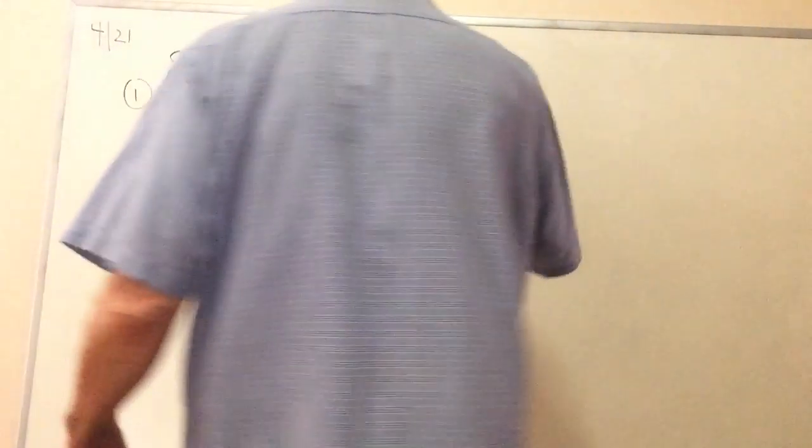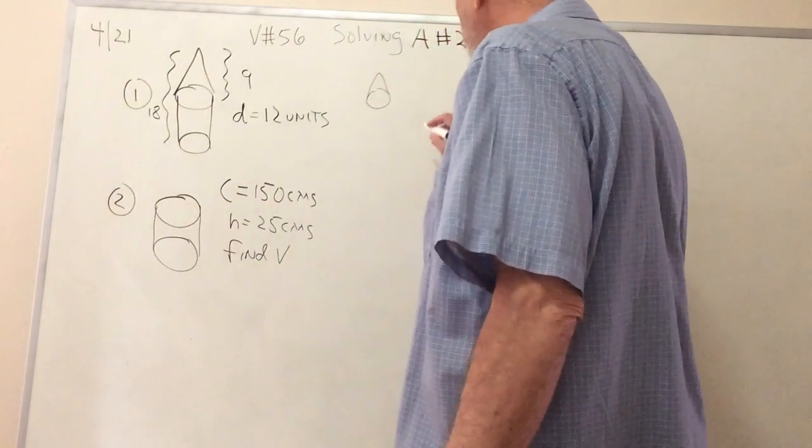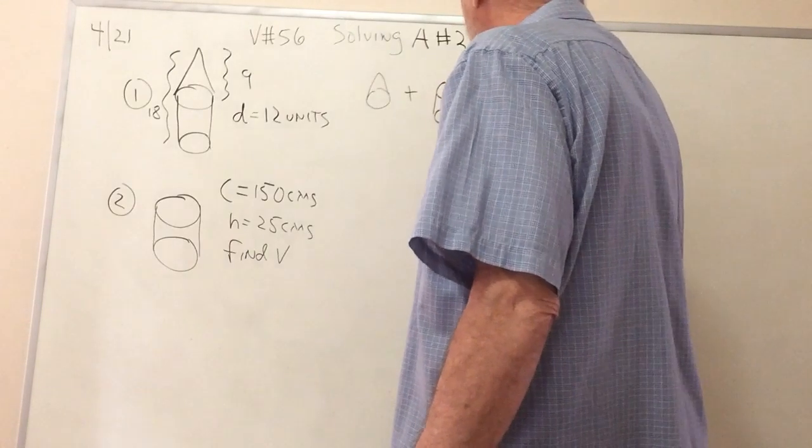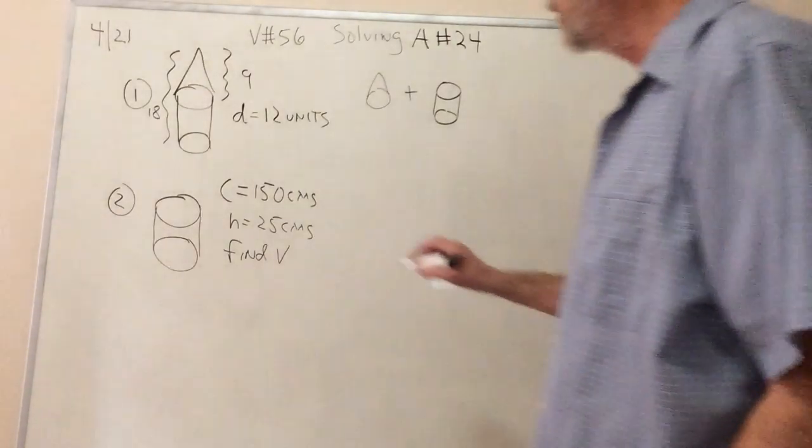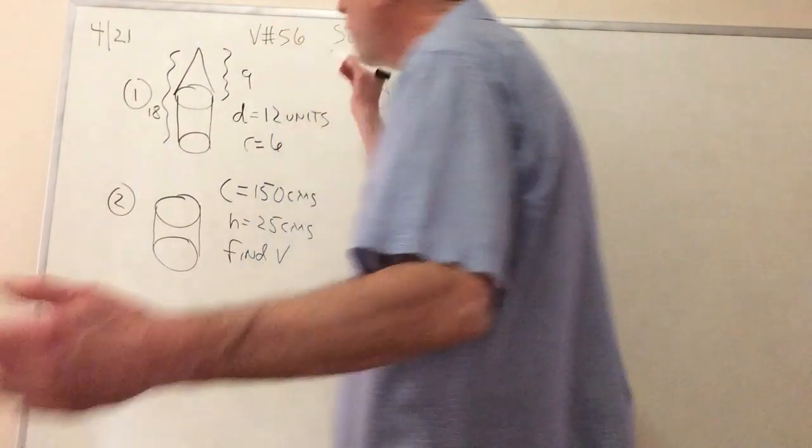As we've said so many times, this is a compound shape. So it's the cone plus the cylinder. They fit to make a compound shape because they share the same diameter. If D is 12, then R is 6. You're supposed to know that.